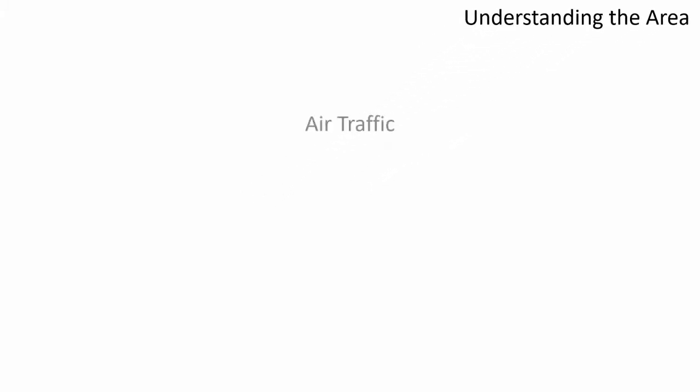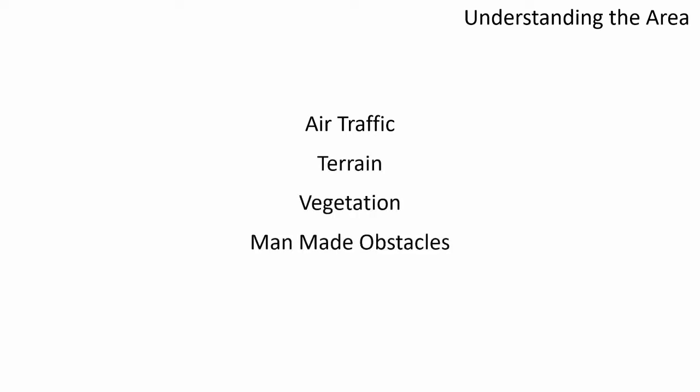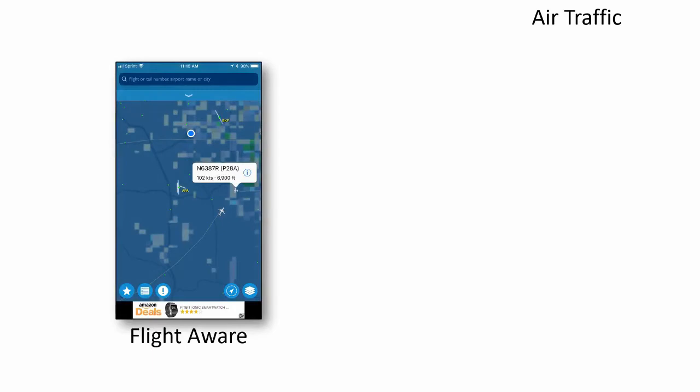Starting with understanding the area, there are several key factors we need to consider: first being air traffic, terrain, vegetation, man-made obstacles, and weather. Starting with air traffic, we need to maintain situational awareness on the other aircraft that are operating in the area that we're going to be operating the UAS in.